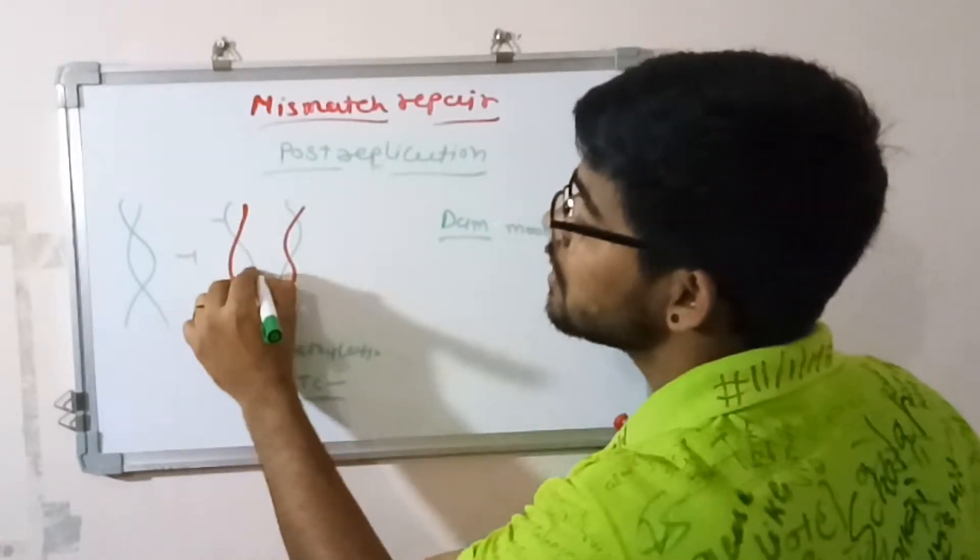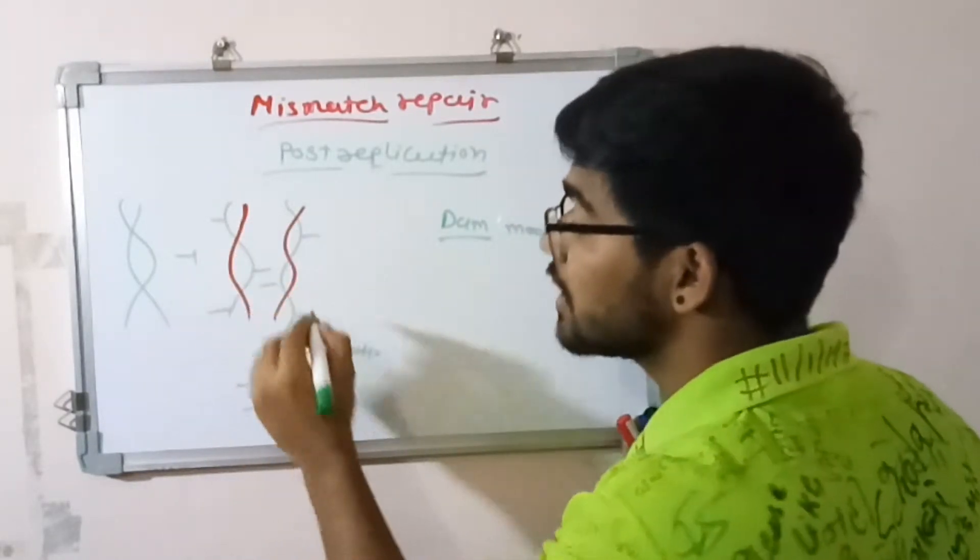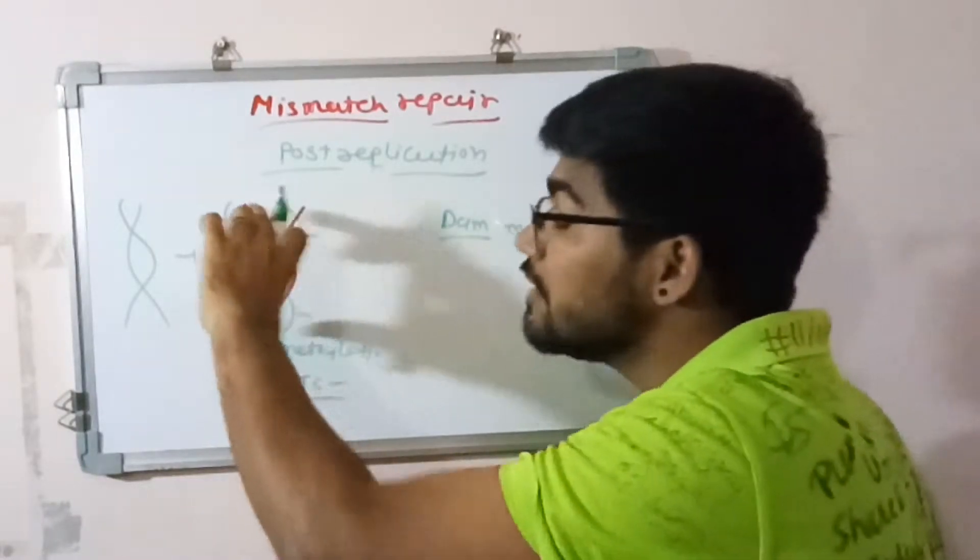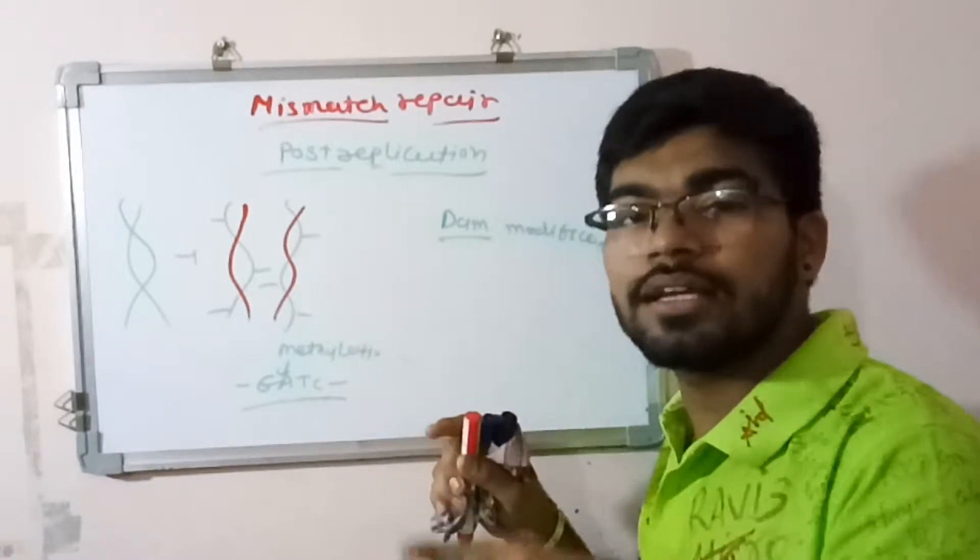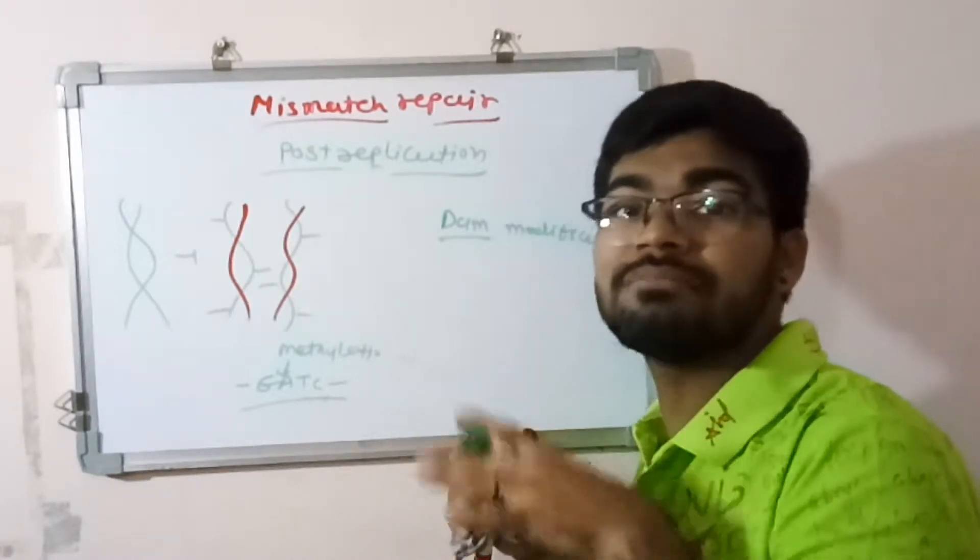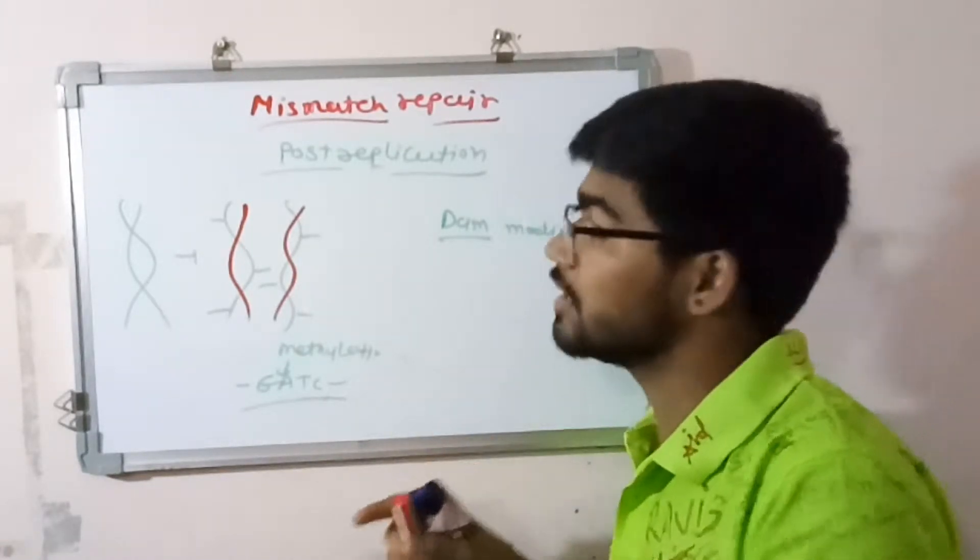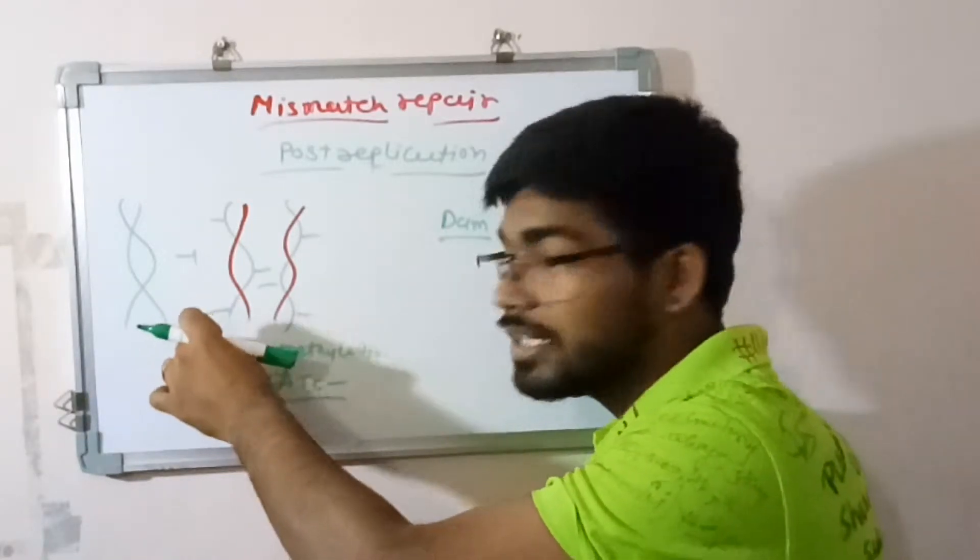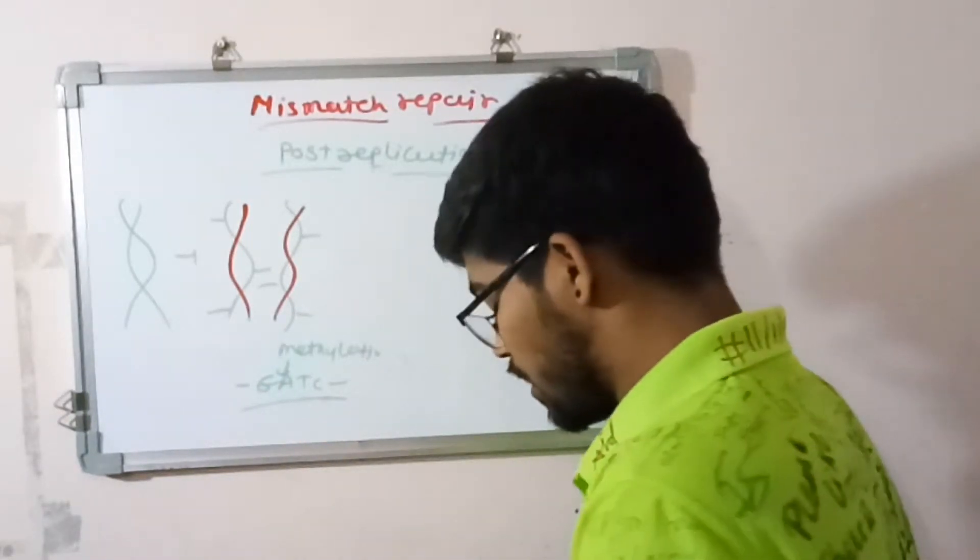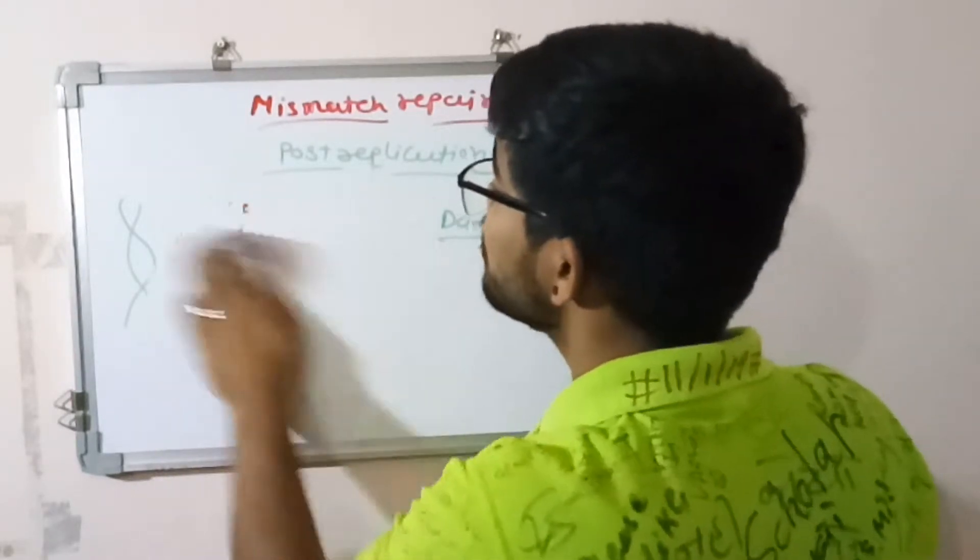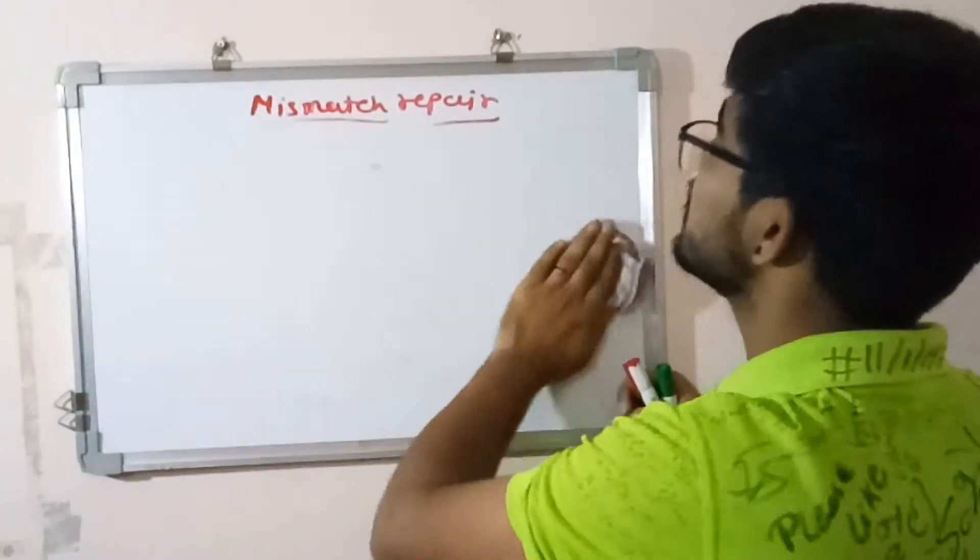So here the methylation occurs on two different strands. One is modified and one is unmodified. So now during the repair mechanism, you can easily differentiate between the parental and the newly synthesized strand. Here the product of the Mut gene is involved.